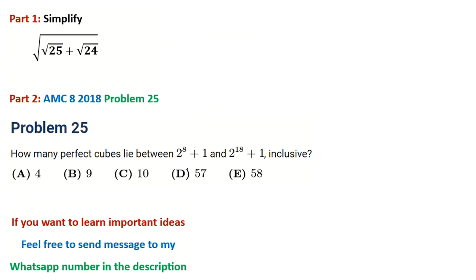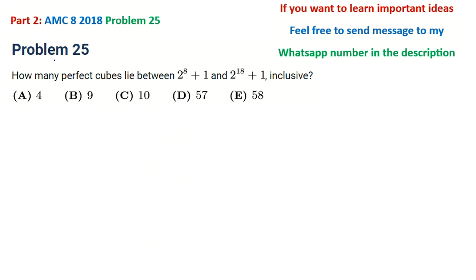In this problem: how many perfect cubes lie between 2⁸ + 1 and 2¹⁸ + 1, inclusive? We can write: a³ ≥ 2⁸ + 1 and a³ ≤ 2¹⁸ + 1.